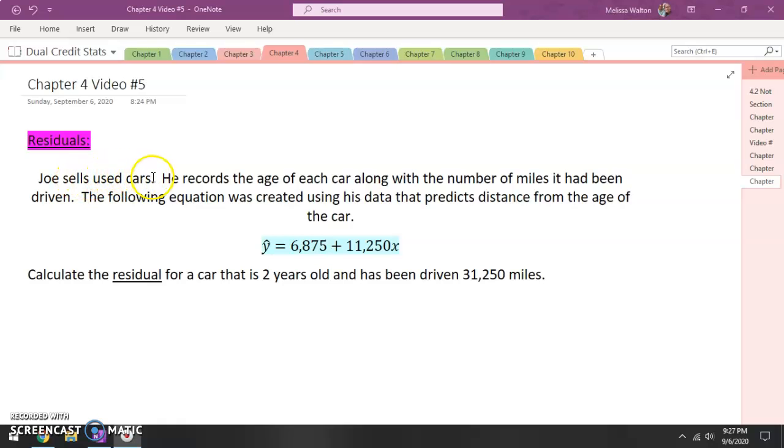So Joe sells used cars. He records the age of each car along with the number of miles it had been driven. And the following equation was created using his data that predicts distance from the age of the car. So we are predicting distance from the age of a car. So if I plug in how old is the car, how many years old is it, we should figure out what the distance is.